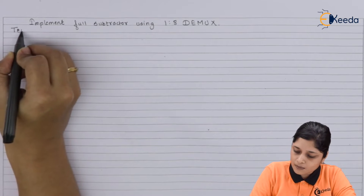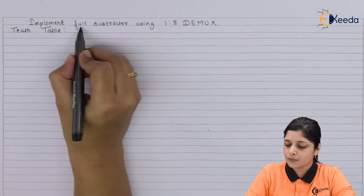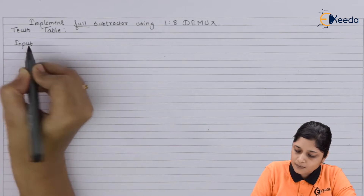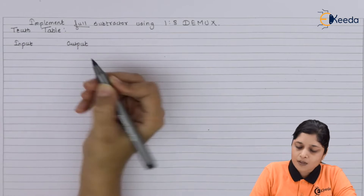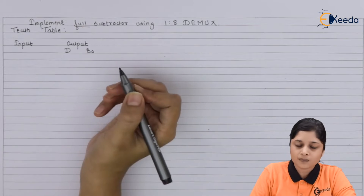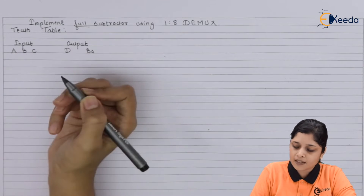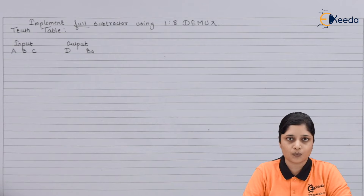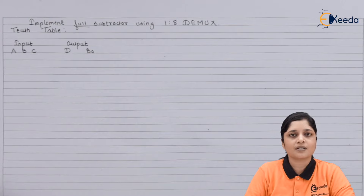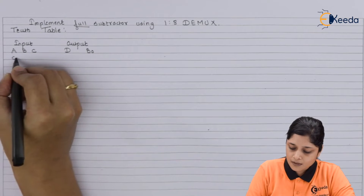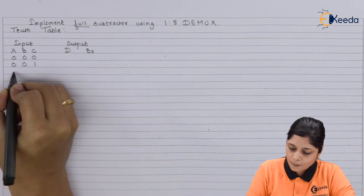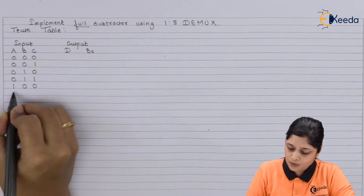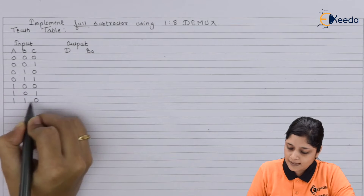So let's start with the discussion of full subtractor using the truth table. We will draw the truth table here. At the output we have difference and borrow, and at the input side we have three inputs: A, B and C. For three inputs we have to show two outputs — difference and borrow. Three inputs means 8 combinations: 0 to 7. So let's write 000, 001, 010 for 2, 011 for 3, then 4, 5, 6 and 7.